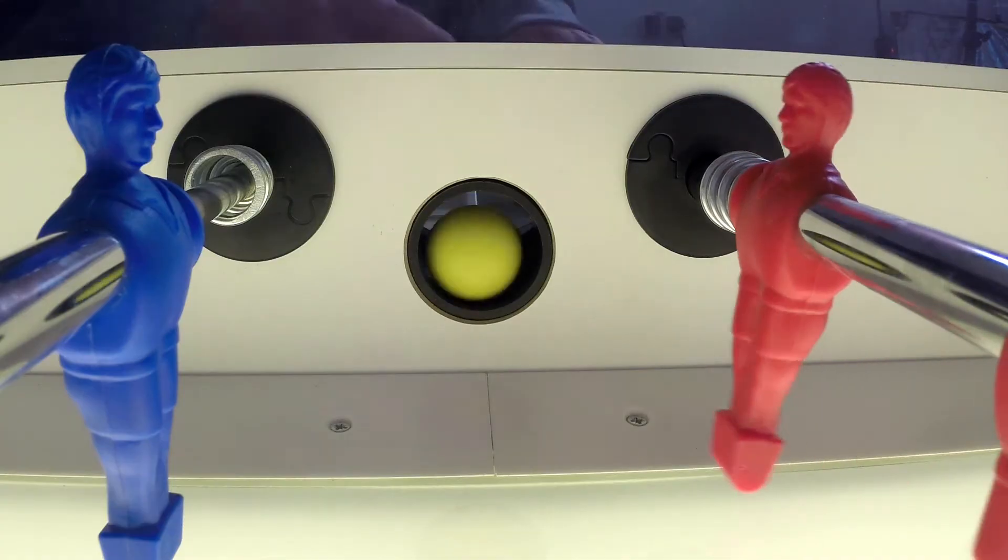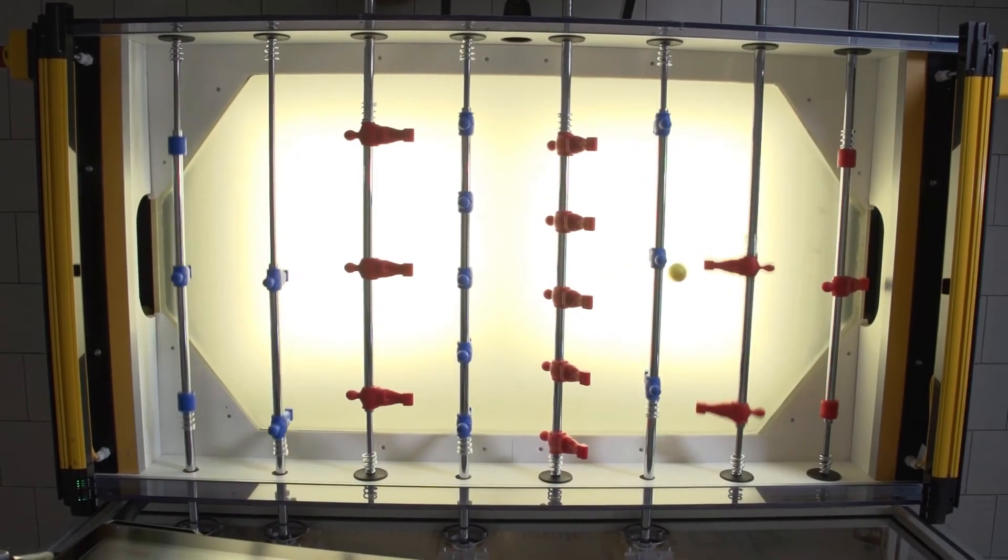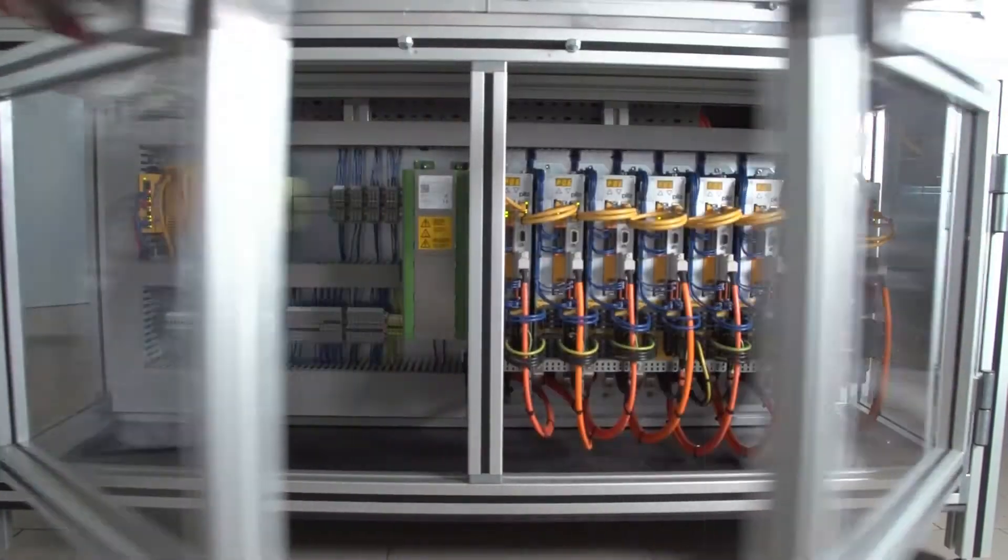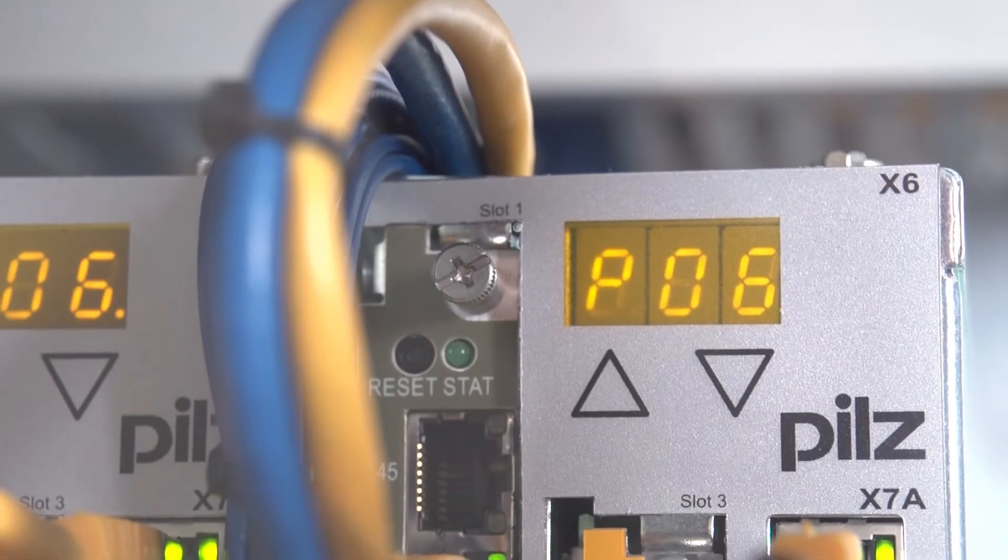When the player throws in the ball, a camera beneath the playing field immediately detects the ball's position. This position is forwarded to the control system PMC Primo-C as a PLC motion CNC control system.